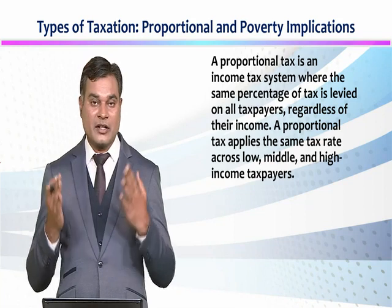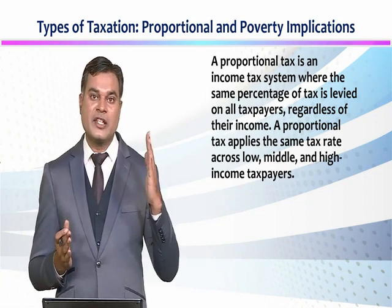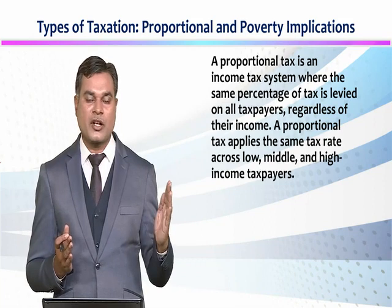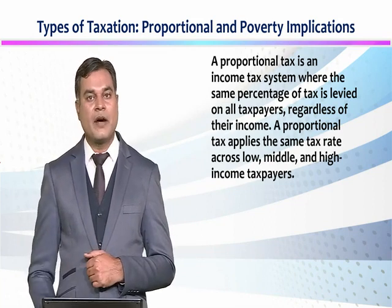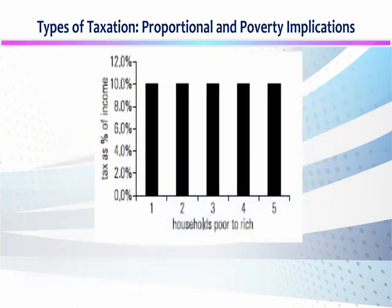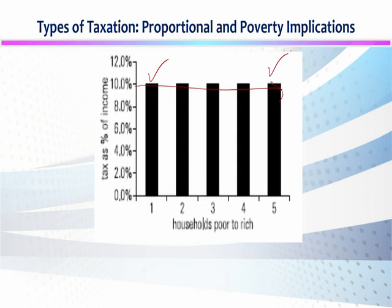When the tax rate is the same, the high income portion will bear a relatively lower burden, and the low income portion will be comparatively lower as well. For example, if income is 50,000, then it will be 10% tax — the percentage of tax rate remains the same regardless of income level.